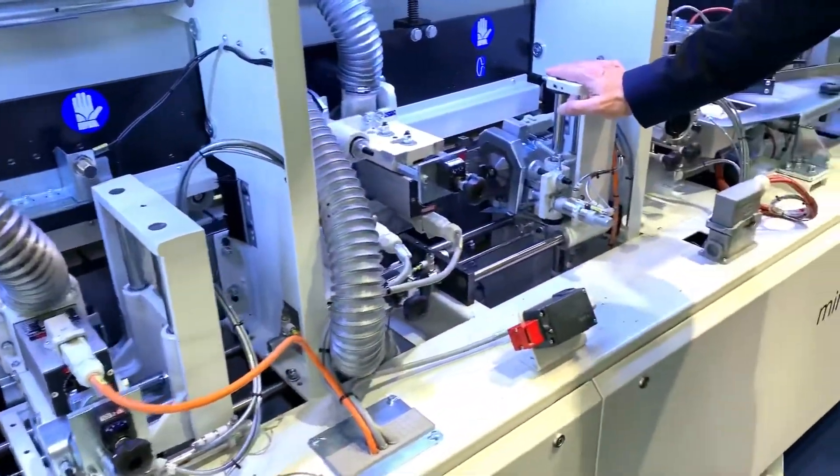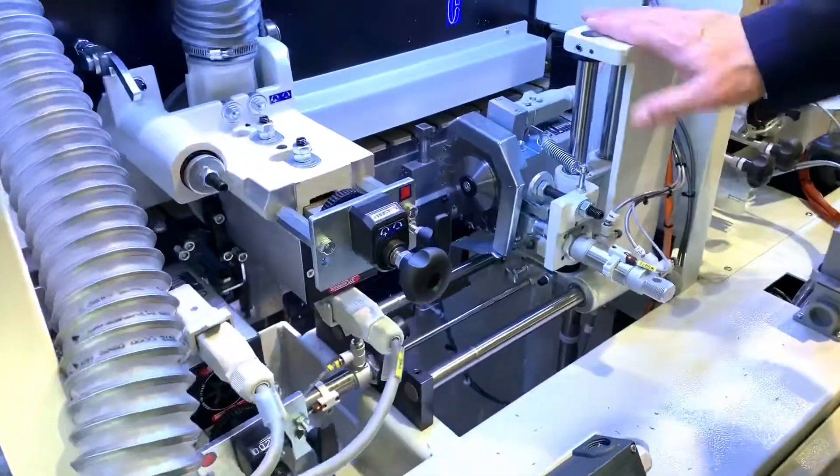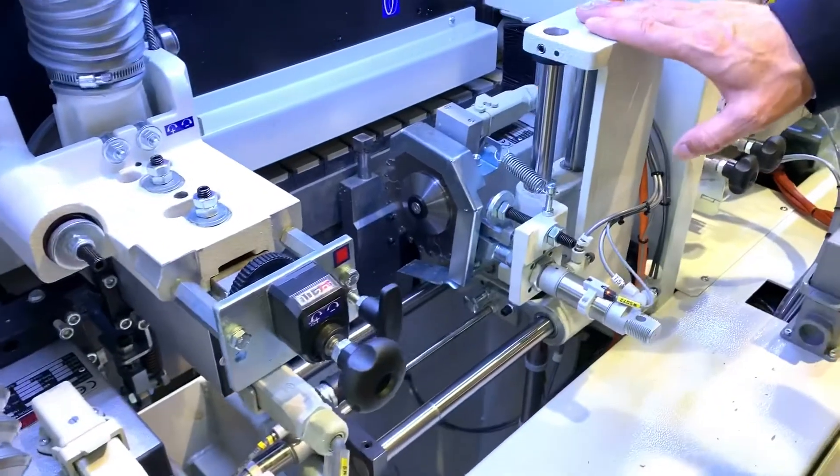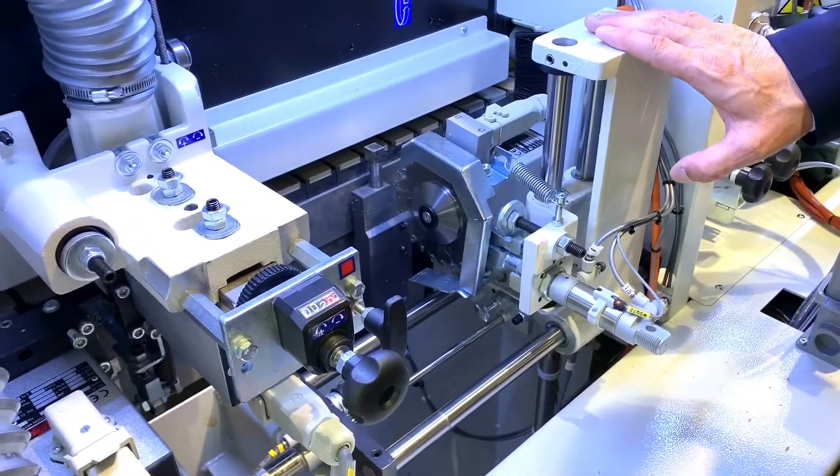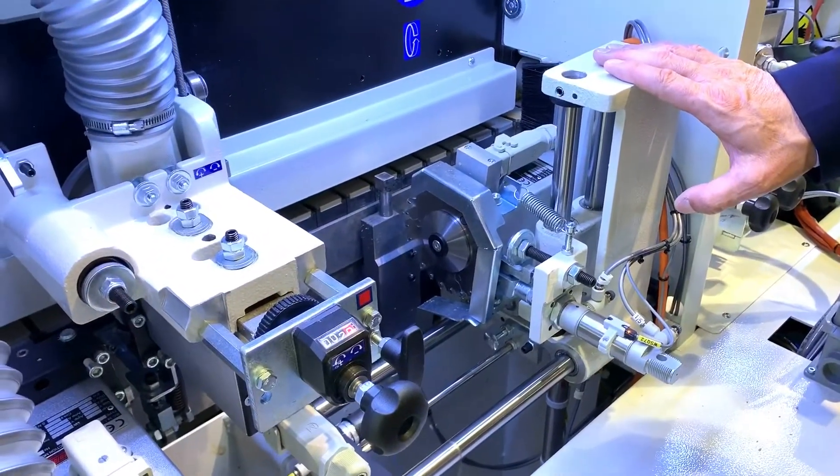And one motor, one blade for the end-cutting unit. The ME40 has three finishing units: edge scraper, glue scraper, and buffer.